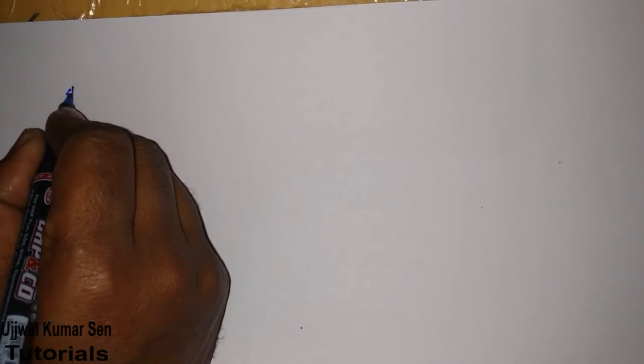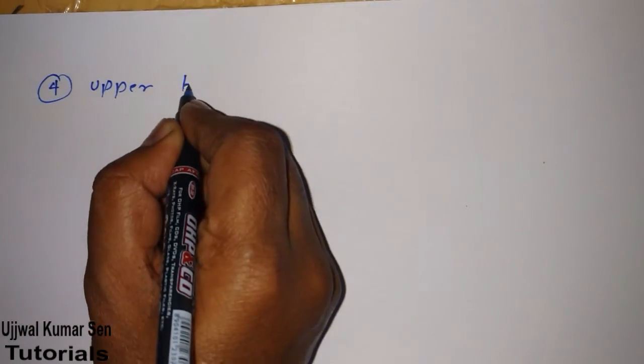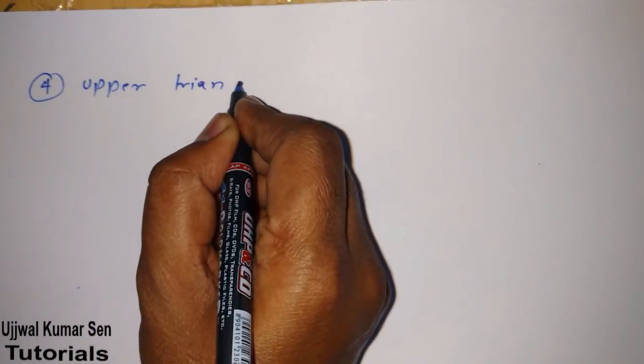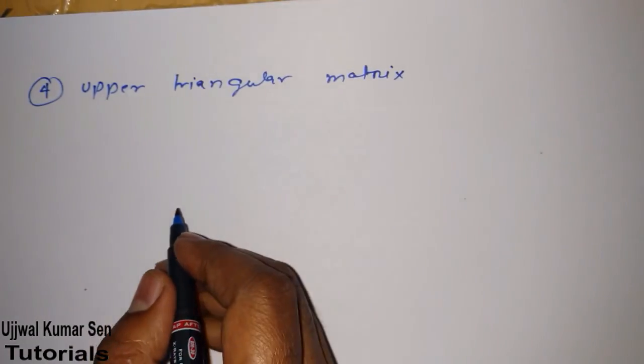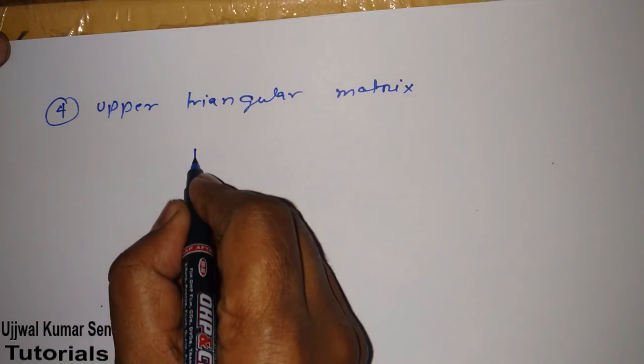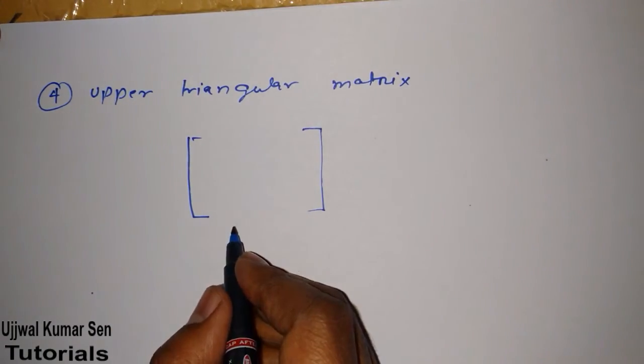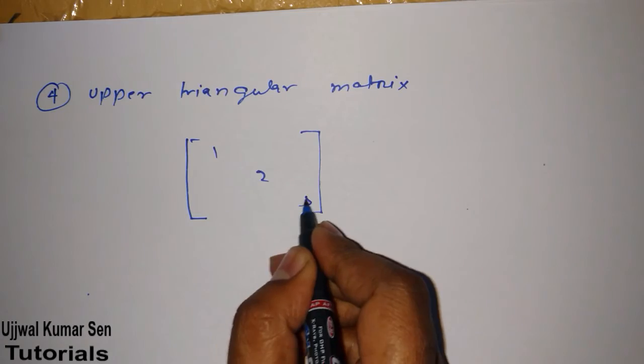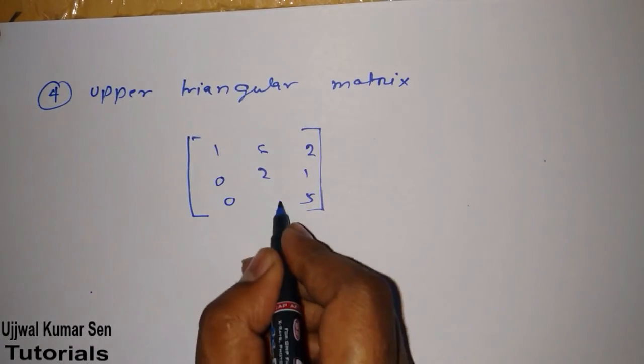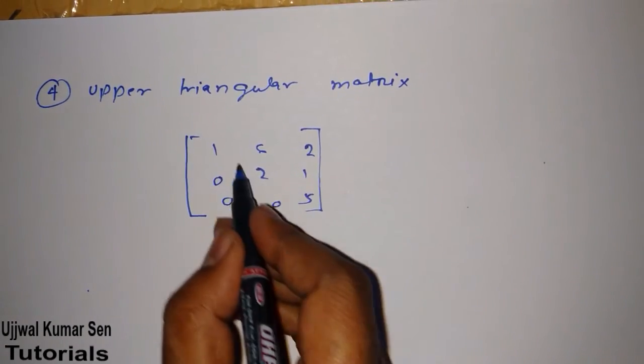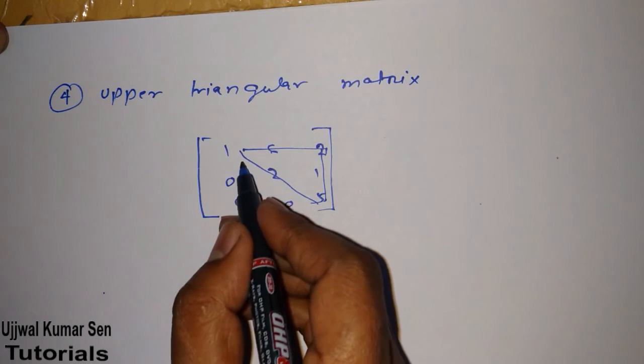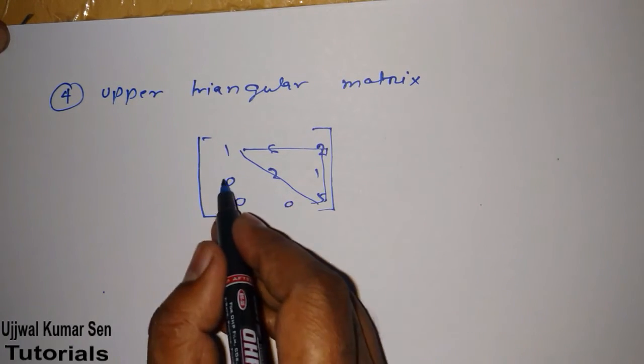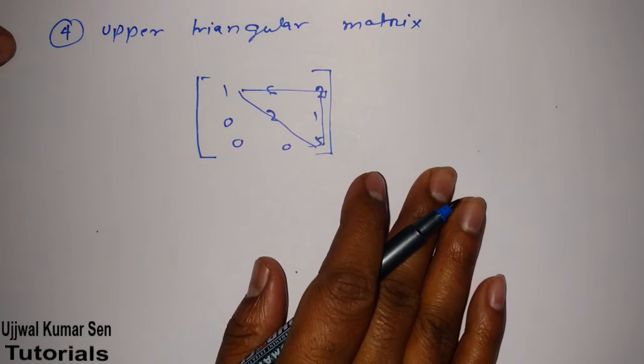And now let's move to the next example that is known as upper triangular matrix. So basically what is upper triangular matrix? Let's take an example so we can understand it quite easily. 1 2 5 6 2 1. Its upper triangle will be having values and its lower triangle, after diagonal values, all of the values will be 0. That's why it is known as upper triangular matrix.